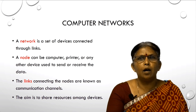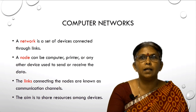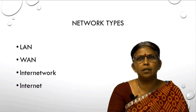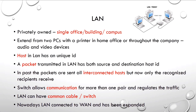Now let us discuss the types of networks: LAN, WAN, internetwork, and internet. First, LAN — LAN is a privately owned network which can be used either in a single office, building, or a campus. It can be extended from two devices with a printer in a home office or throughout an entire building.